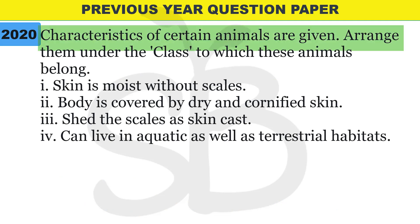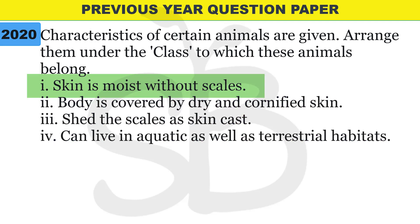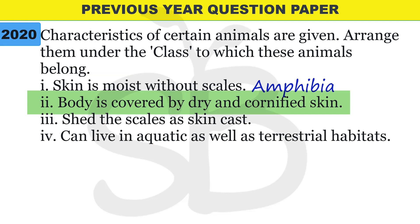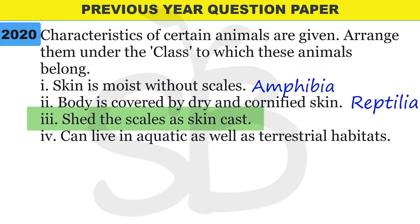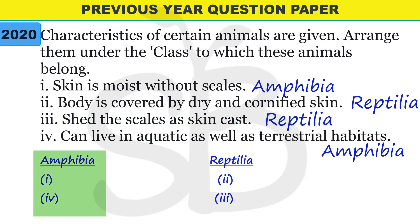Next question from 2020: characteristics of certain animals are given; arrange them under the class to which these animals belong. Moist skin without scales - that is Amphibia. Body covered by dry and cornified skin - that is Reptilia. Shed scales as skin cast - that is Reptilian members. Can live in aquatic as well as terrestrial habitat - that is Amphibia. So options 1 and 4 are Amphibia, and options 2 and 3 are Reptilia.